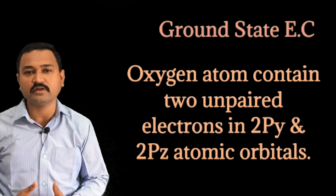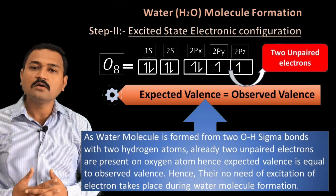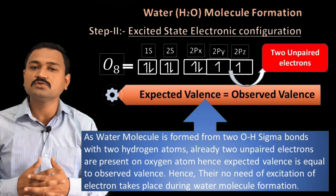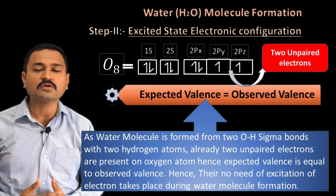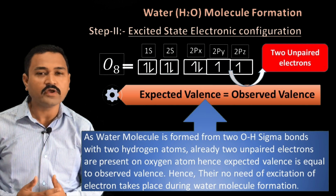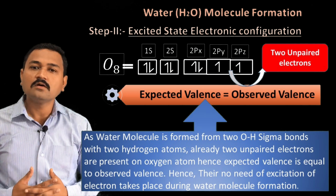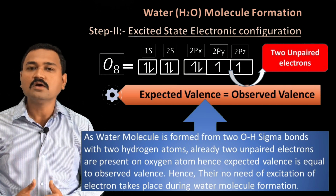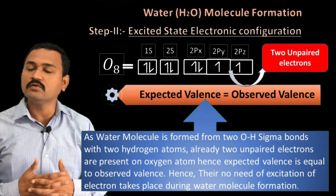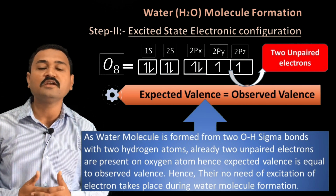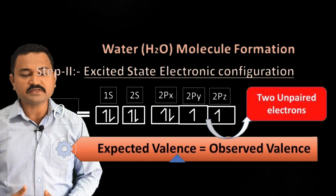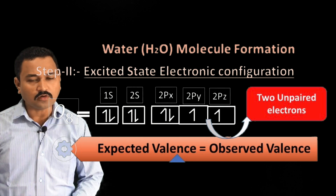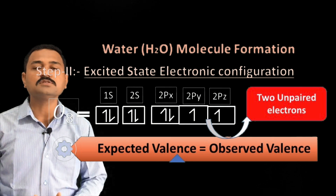The oxygen atom contains two unpaired electrons in the 2py¹ and 2pz¹ atomic orbitals, hence the expected valency equals the observed valency. We know that in the water molecule there is formation of two O–H sigma bonds. Therefore, there is no excited state electron promotion taking place during the formation of water molecule in the central oxygen atom. The two unpaired electrons in oxygen are responsible for the formation of the water molecule.